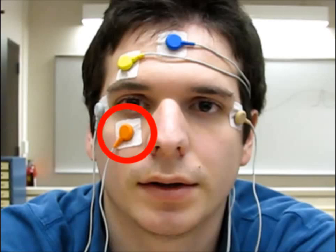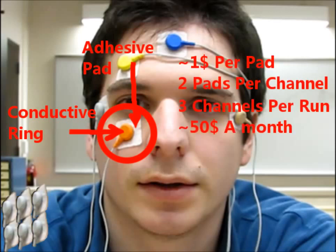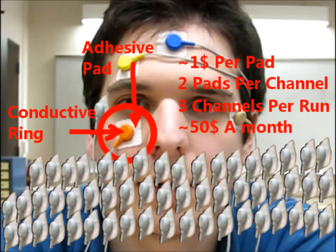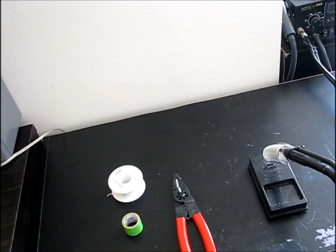A medical grade electrode pad has a small conductive ring surrounded by a conductive adhesive strip. They cost around a dollar per pad, which means you can spend fifty dollars per month per channel. I'm about to show you how you can create a reusable electrode with only a penny,